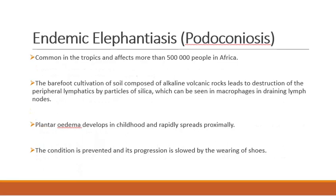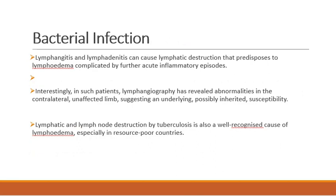Endemic elephantiasis — podoconiosis — is common in tropical countries and affects more than 500,000 people in Africa. It is caused by barefoot cultivation of soil composed of alkaline volcanic rocks, leading to destruction of peripheral lymphatics by silica particles, also seen in macrophages in draining lymph nodes. Plantar edema develops in childhood and spreads proximally. This condition can be prevented and its progression slowed down by wearing shoes.